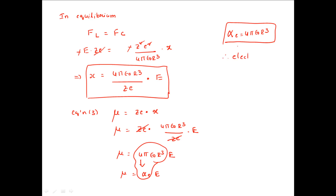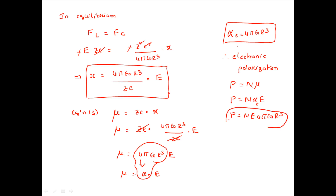Therefore, the electronic polarization P = n × μ = n × αe × E = n × 4πε₀r³ × E, where n is the number of atoms per unit volume. This is the electronic polarization expression, and αe = 4πε₀r³ is the electronic polarizability expression. Hope you understood this session.